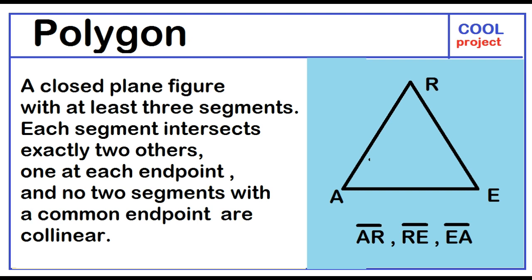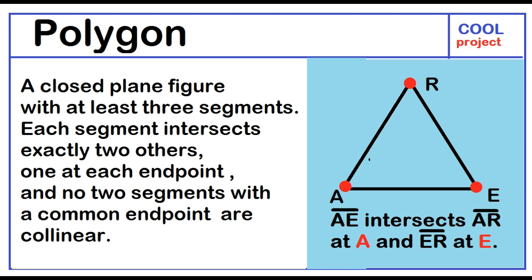Each segment intersects exactly two others. Example, segment AE intersects segment AR at A and segment ER at E. And no two segments with a common endpoint are collinear.